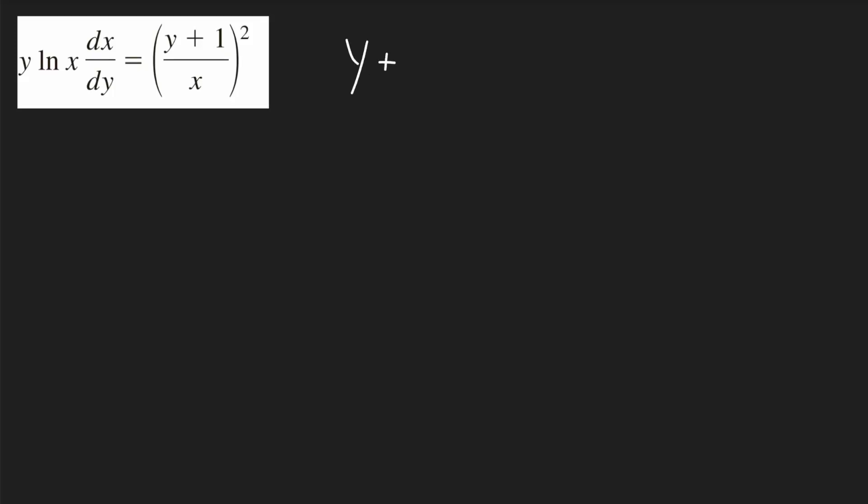In this problem, I'll distribute the exponent to both terms, top and bottom, on the right side. So it'll be y plus 1 squared on the top and x squared on the bottom.